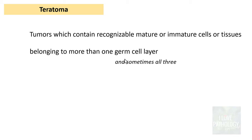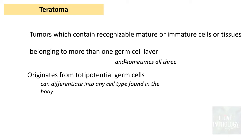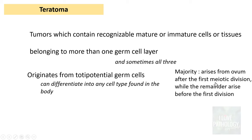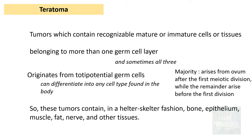As we understood from the classification, teratomas originate from totipotential germ cells, which can differentiate into any cell type found in the body. The majority of teratomas arise from the ovum after the first meiotic division, while the remainder arise before the first division. These tumours contain variable amounts of bone, epithelium, muscle, fat, nerve, and other tissues in a helter-skeletal fashion.